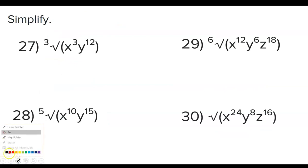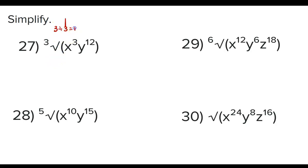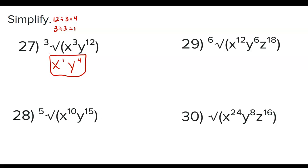Problem 27: we have the cube root of x³y¹². For this, you divide the exponents by the index. 3 divided by 3 is 1, so this will be x to the power of 1. And 12 divided by 3 is 4, so that would be y to the power of 4. You do not need to write a power of 1, so the answer is xy⁴.